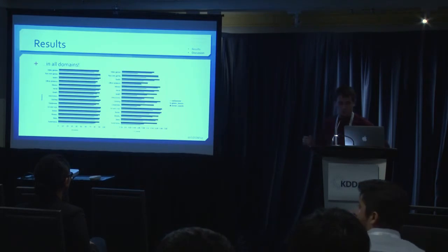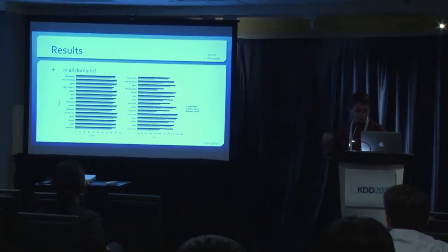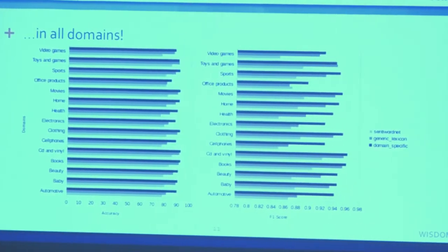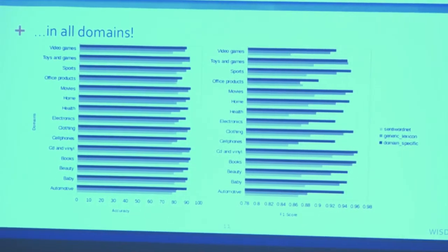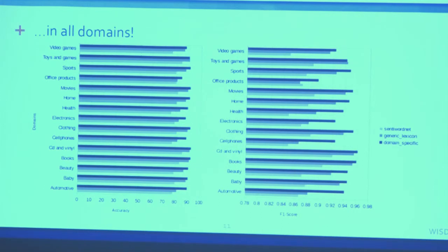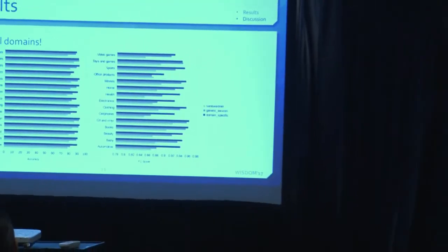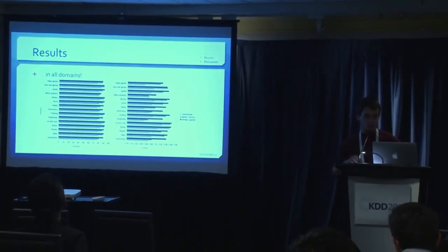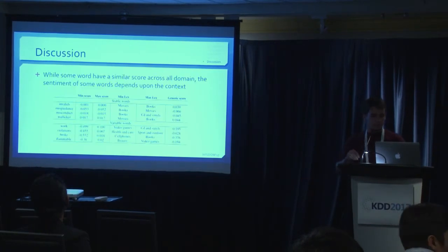So, oh yeah, and it works. It actually works in all domains. So the dark bar is the domain-specific accuracy in F1 score. The middle one is the generic lexicon that we created. And the light one is the SentiWordNet lexicon. And as we can see, the domain-specific lexicon is more accurate in every domain, actually. And the F1 score is better in every domain, which proves that, well, when you run sentiment analysis, the context is really important, and I think it should be taken into consideration.